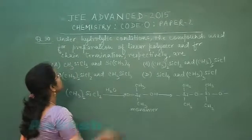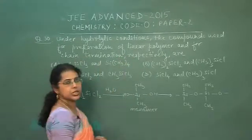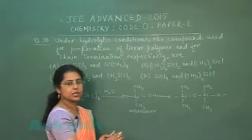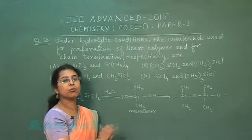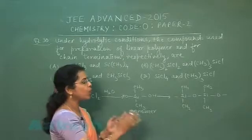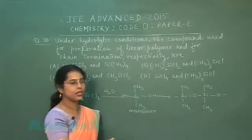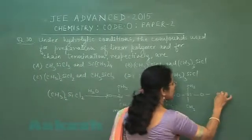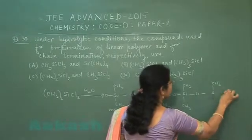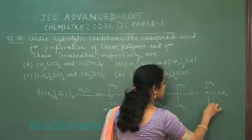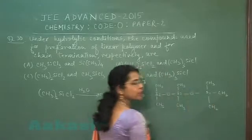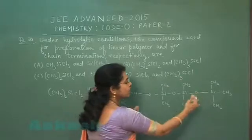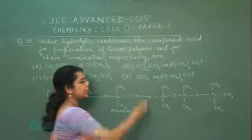The second part of the question is for chain termination — stopping the condensation of the polymeric chain. For chain termination we need a blocking agent, and that blocking agent should have 3 alkyl groups present. A blocking agent means the reaction should stop. To stop the reaction, there should be only one chlorine, which gets replaced by an OH group, and after condensation it blocks the reaction.